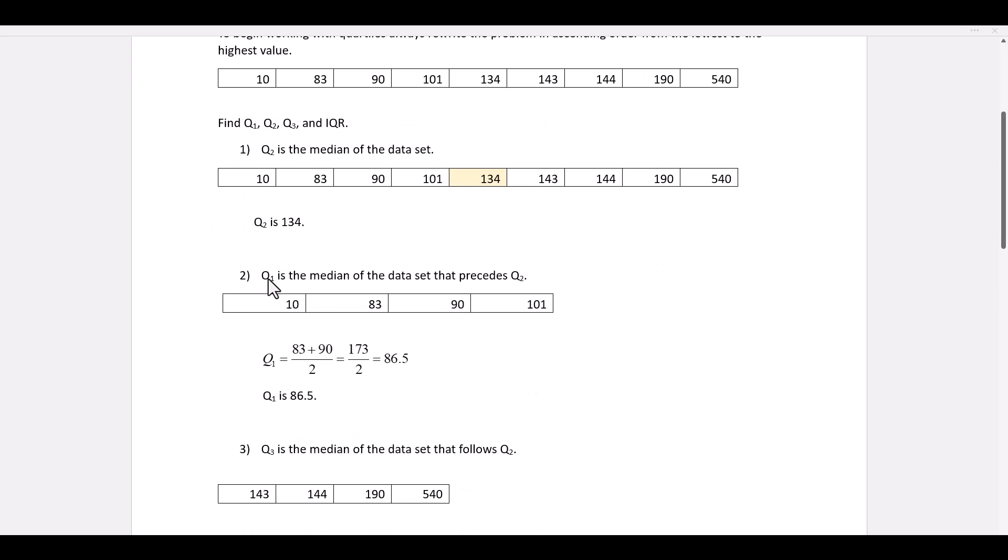Quartile 1 is the median of the data set that precedes quartile 2. So these are the four values that precede quartile 2. We find the median of this data set. Since there's four values, we have to find the midpoint of the two middle values, which is 86.5. So quartile 1 is 86.5.